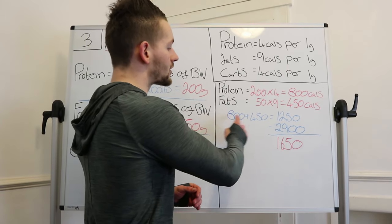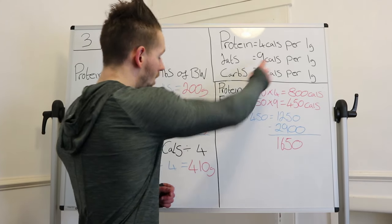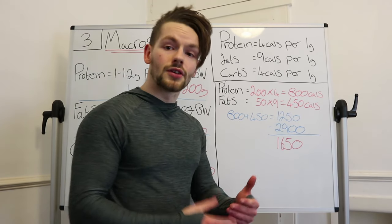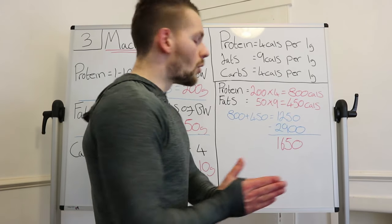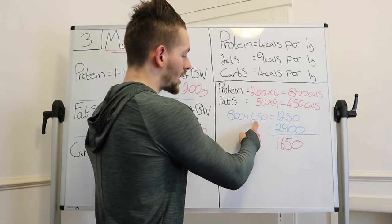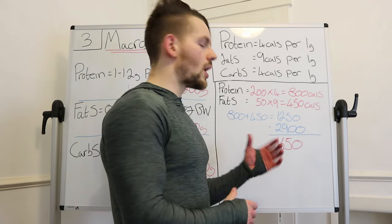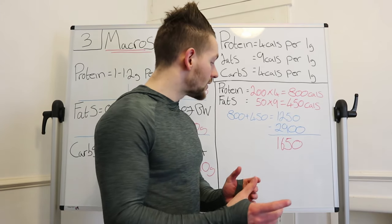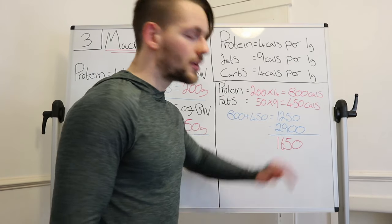For fats: 50 grams times 9 calories per gram gives us 450 calories from fat. Adding these together — 800 calories from protein plus 450 calories from fat — equals 1,250 calories. Out of our 2,900 total, 1,250 are coming from protein and fats, leaving us 1,650 calories remaining. Those are the calories that will be coming from our carbohydrates.